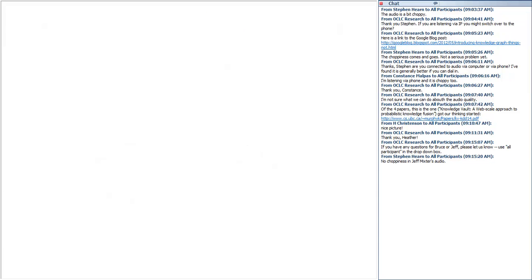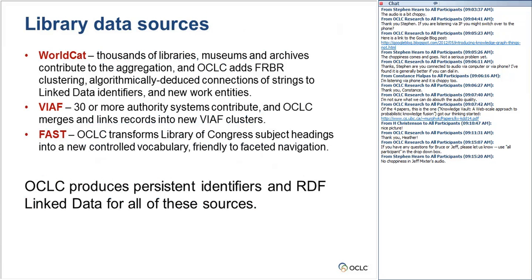Our current data sources are WorldCat.org — including both the WorldCat.org data and the works data released last year — VIAF, and FAST. VIAF includes, I believe, 32 authority file systems. That's actually a very valuable source for the extractor and fusion process because we can begin to build a large set of person entities along with all their associated strings across all the authority files that currently feed into VIAF.